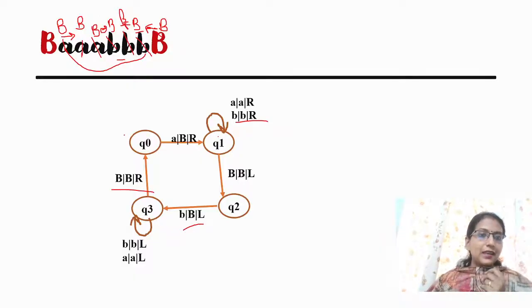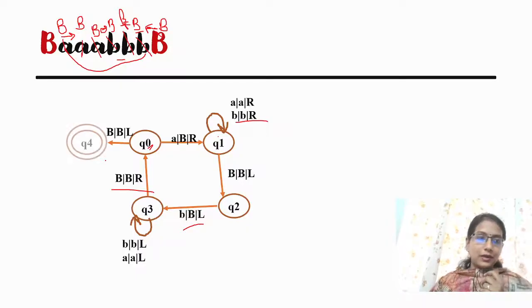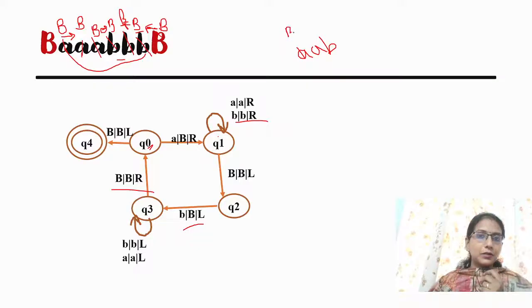We have reached the final state. This is the final state. Now we go blank on the left. We have to go blank — Q0 is now the relevant state. What is blank? We go blank. A blank is replaced by A.